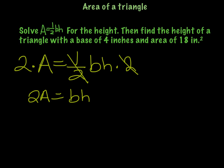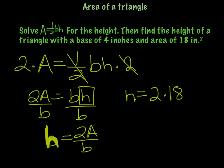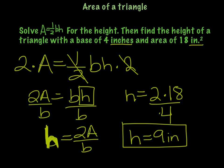Since we're solving for the height, we want to get h by itself, so we need to undo this multiplication by dividing. So h = 2A over b. Now we're going to find the height when the base is 4 and the area is 18 square inches, so we just plug in. The height equals 2 times 18 divided by 4. We've got square inches and inches so we don't have to convert any units. 2 times 18 divided by 4 gives you 9 inches. Make sure you always write your units.